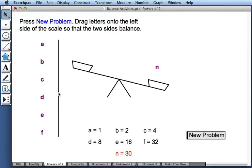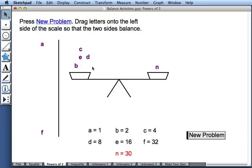So to balance 30, I'm going to drag my E, my D, my C, and my B onto the other side. That creates a balanced equation since 16 plus 8 plus 4 plus 2 is equal to 30.